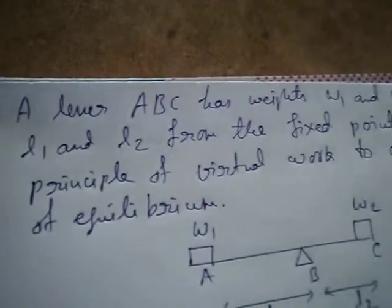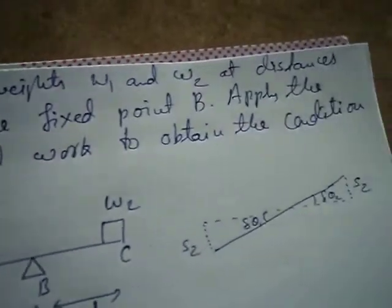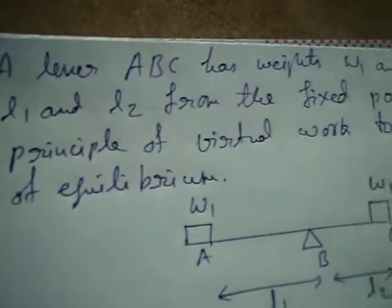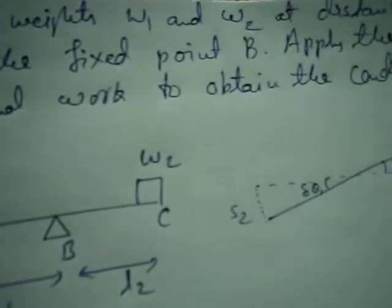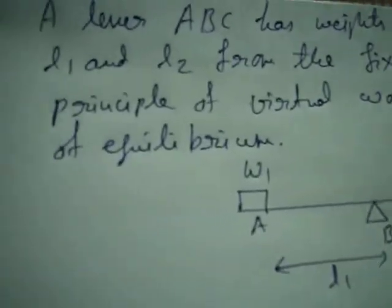The given problem is: a lever ABC has weights W1 and W2 at distance L1 and L2 from the fixed point B. Apply the principle of virtual work to obtain the condition of equilibrium.